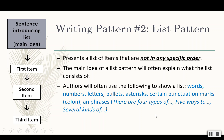Authors will often use the following words or things to show a list. They might use words like first, second, third. They might actually number them one, two, three. They might use letters A, B, C, or bulleted points — those might be dots or asterisks, which are stars.